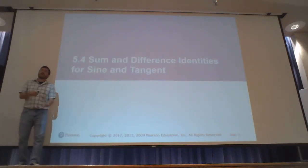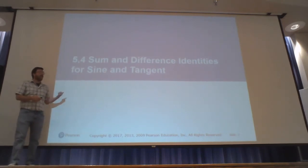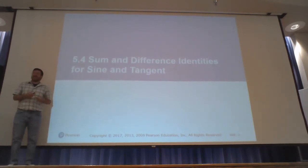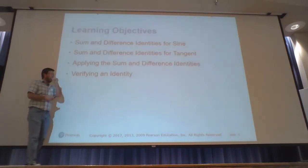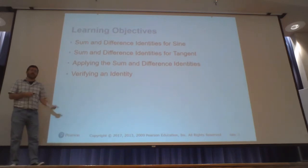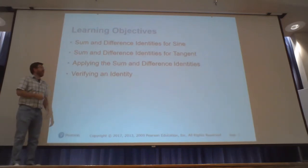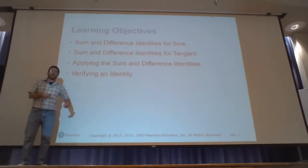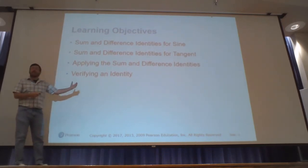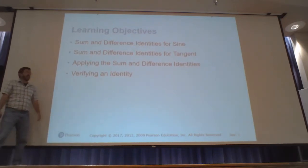So last time we talked about the sum and difference identities for cosine. Today we'll go over the sum and difference identities for sine and tangent. We'll talk about what they are, how we get to them — we'll derive them using the ones for cosine, so it'll be a little bit simpler. Then we'll apply them in a couple of problems and verify an identity using those.